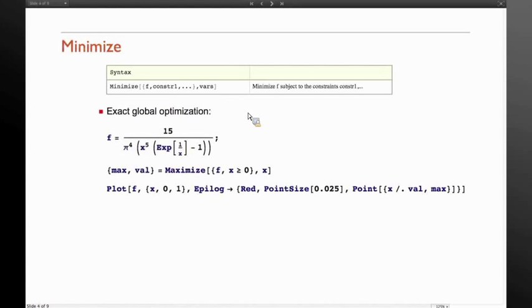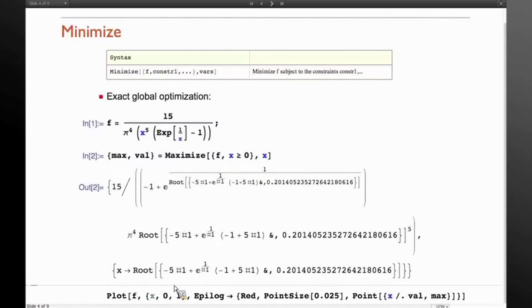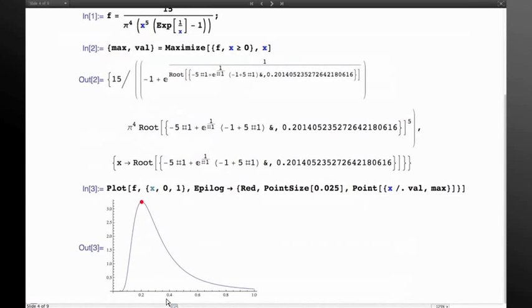All right, so let's just dive right in. Here's Minimize. So Minimize, if you give it exact values, will give you the exact global optima. So let's just run this. This one gives us a daunting looking expression for the solution in terms of some roots. But if we plot it, we see that actually it did find the maximum. So I won't spend too much time on Maximize. Actually, what happens if you use Maximize and you don't give exact values, if you give numerical values, it will just go ahead and call NMinimize, which we'll talk about a bit later.